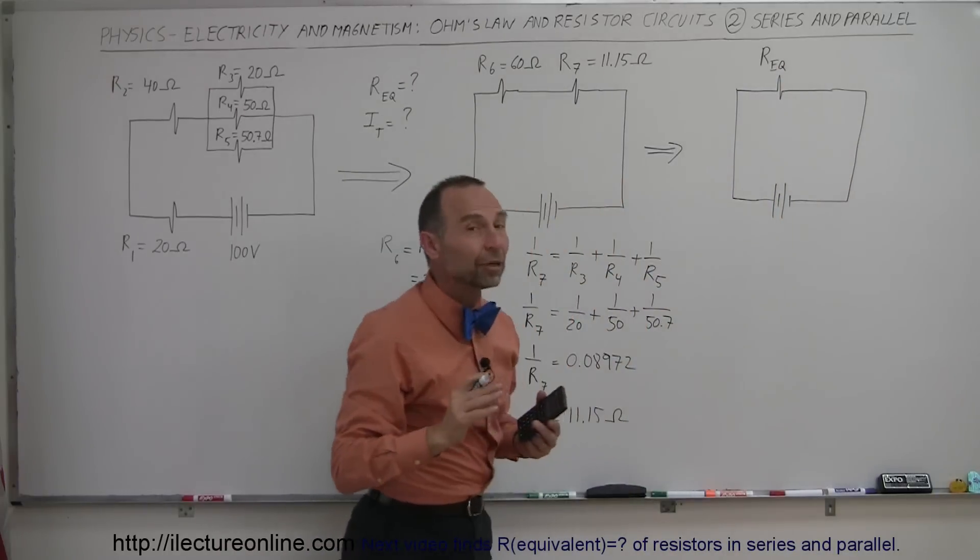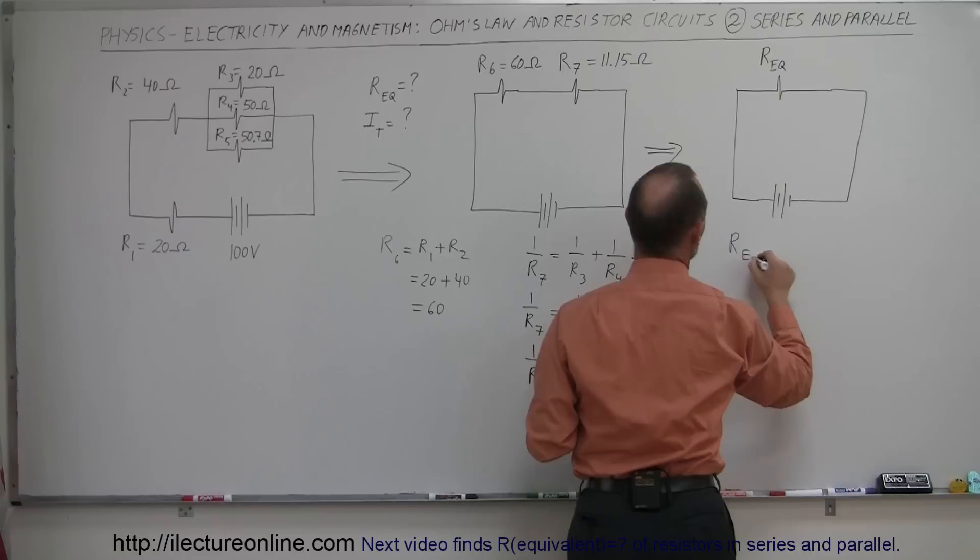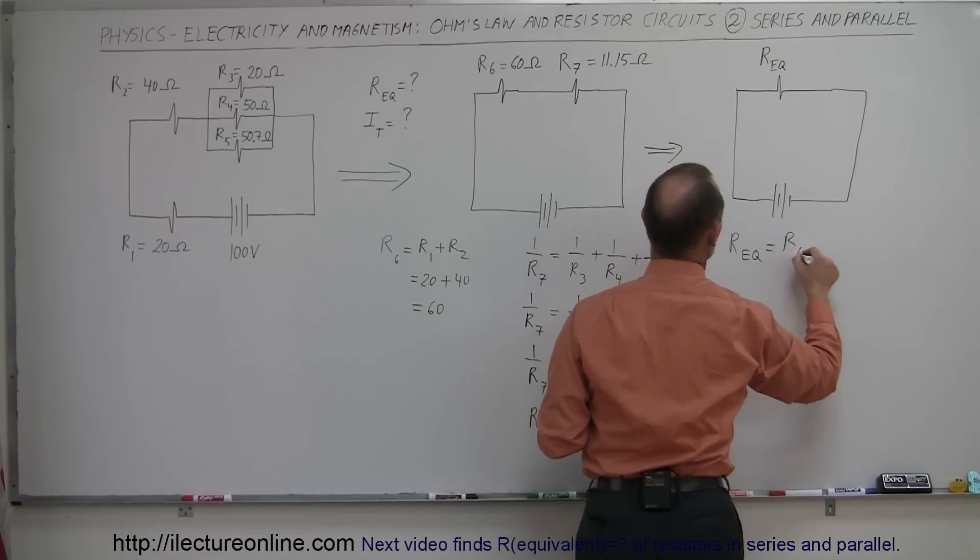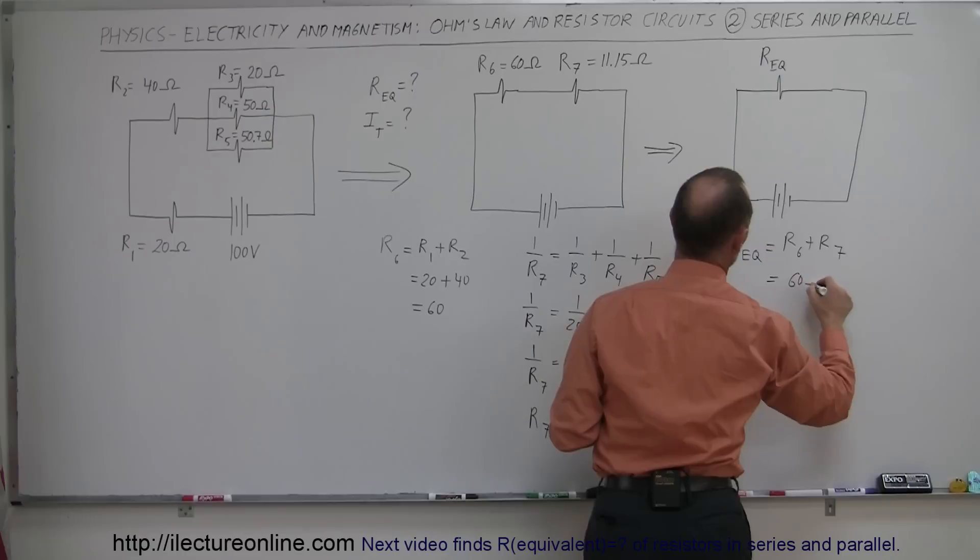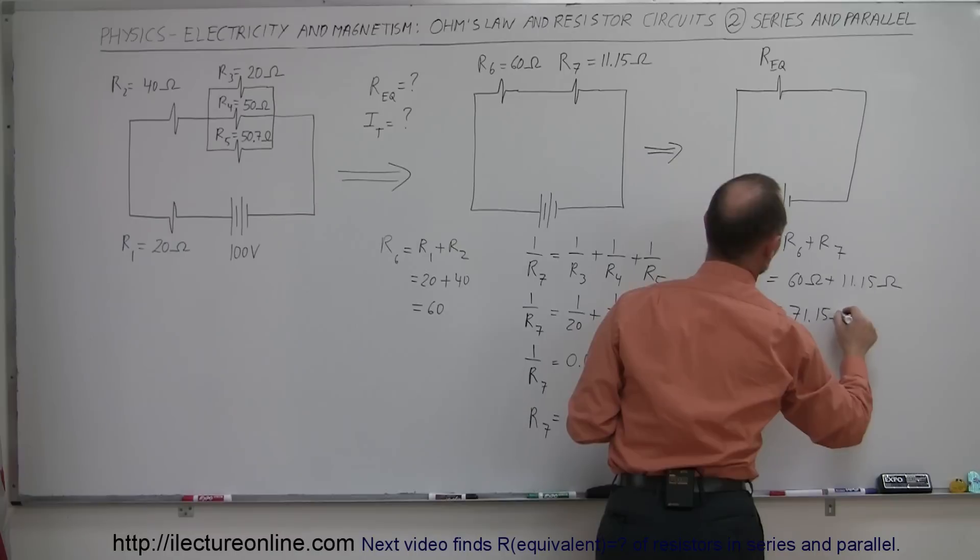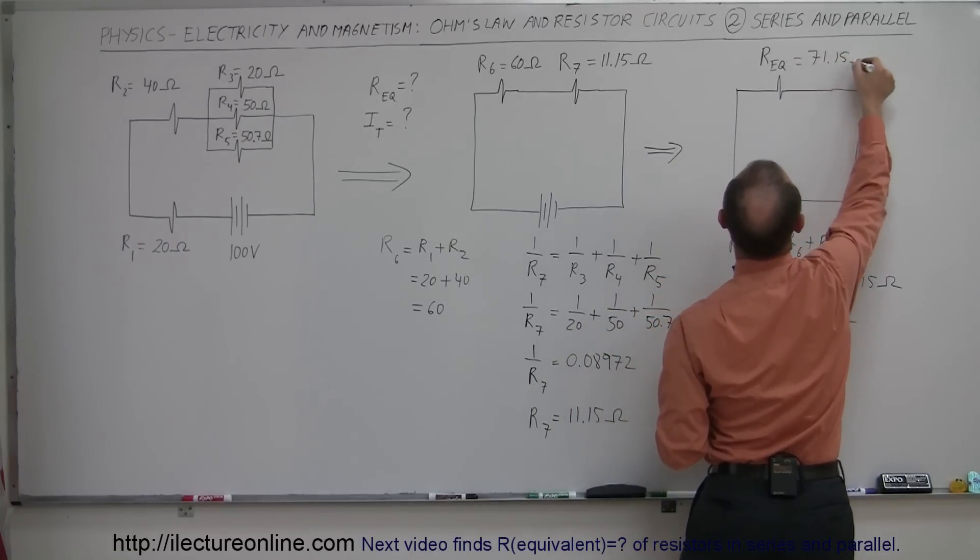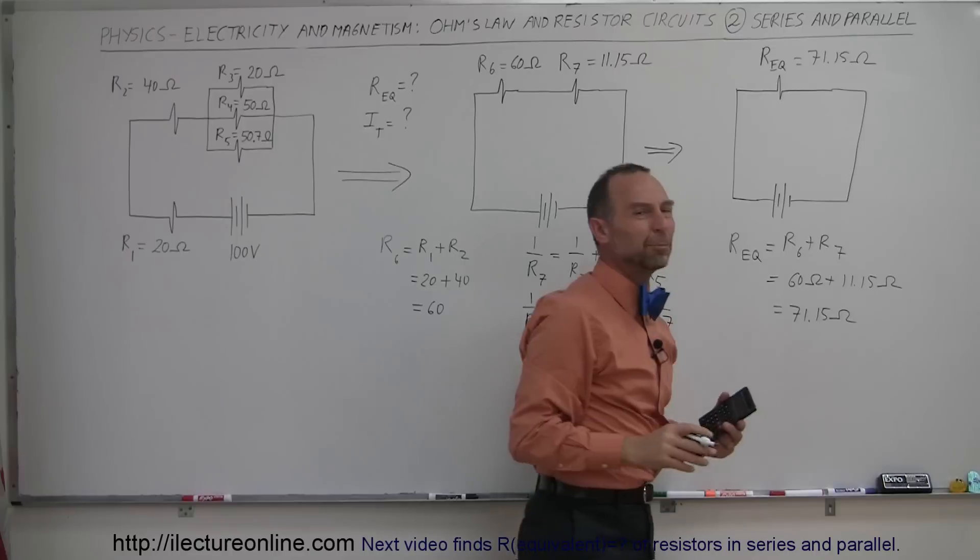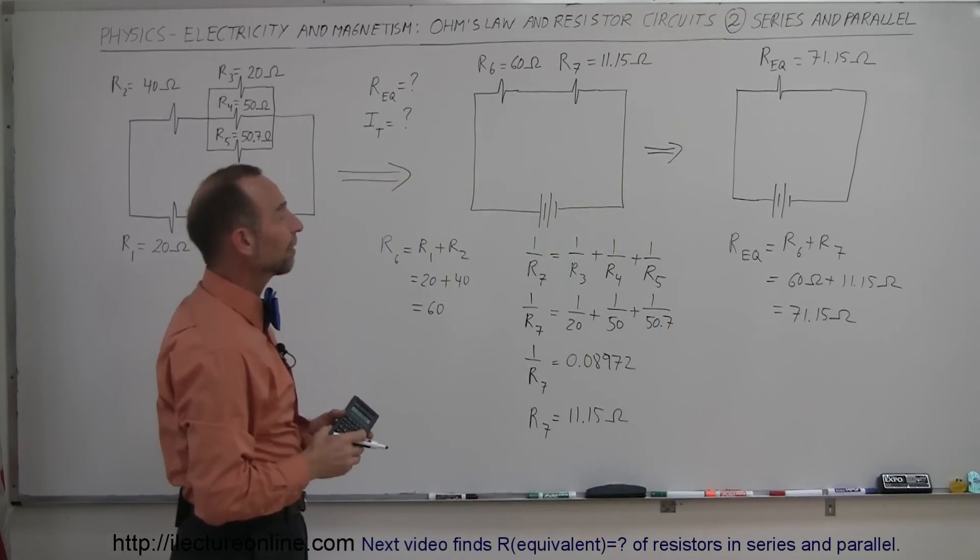And to find the value of the equivalent resistor, we simply have to add these two together. So R equivalent, since they're in series, is equal to R6 plus R7, which is equal to 60 ohms plus 11.15 ohms, so it's equal to 71.15 ohms. So 71.15 ohms. I guess I don't really need to keep the 0.15, but there it is. I'll just call it 71 ohms. That's the equivalent resistance.